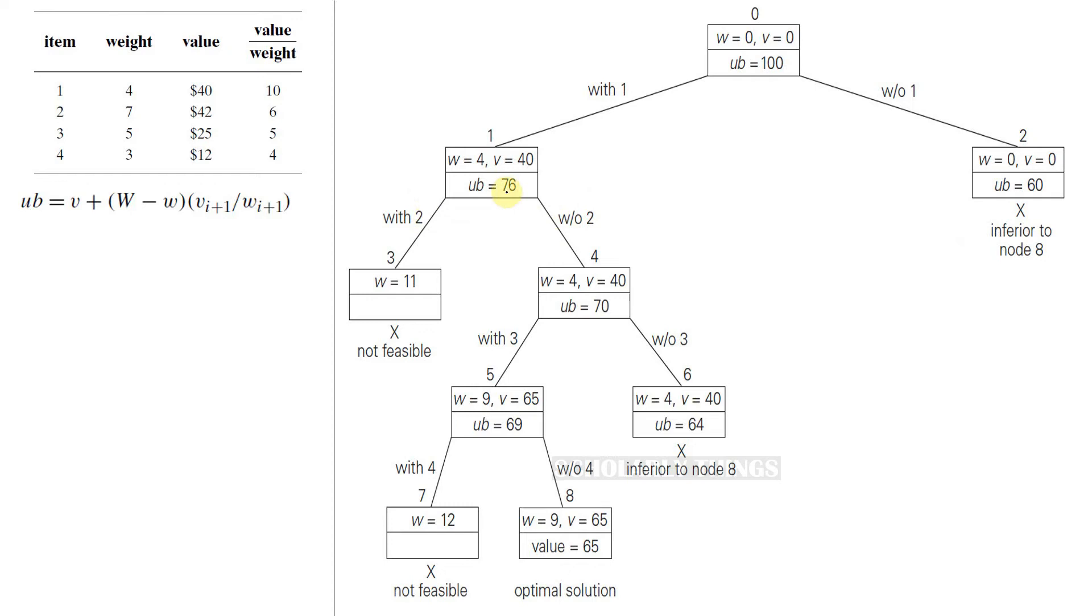Next check for with and without item 2. We have already included item 1 and now if we include item 2, the weight will be 7 plus 4. So it will be greater than the capacity of the knapsack itself. So this solution is not feasible. The other option for us to select is without item 2. We still have item 1 and we are excluding item 2. So the weight is 4 and the value is 40 of item 1. So the upper bound will be 40 plus 10 minus 4 into value to weight ratio for the next item, which is 5. So the upper bound value will be 40 plus 30, which is 70.